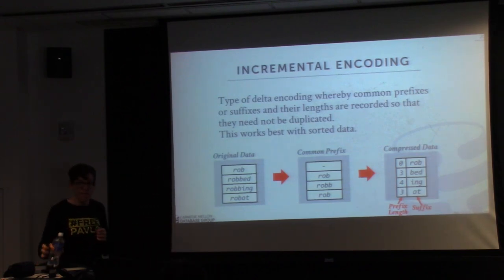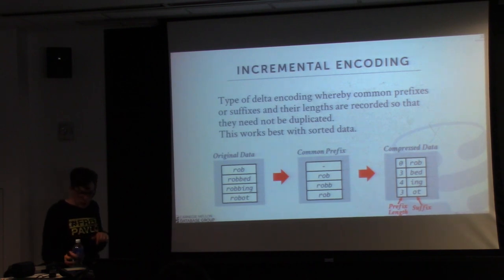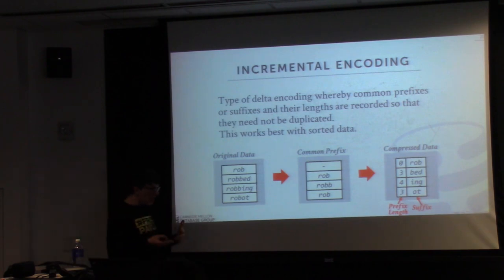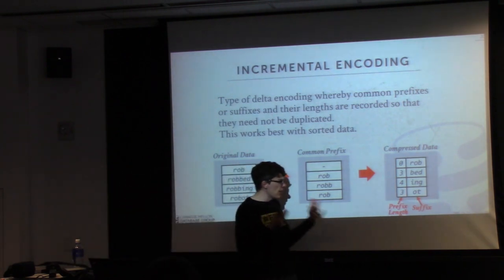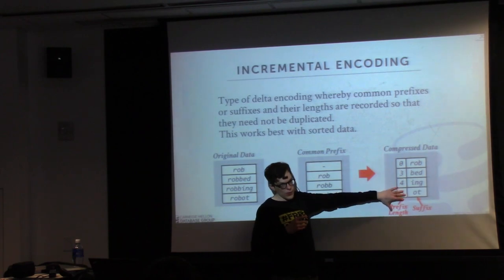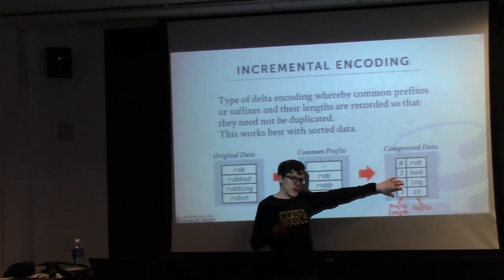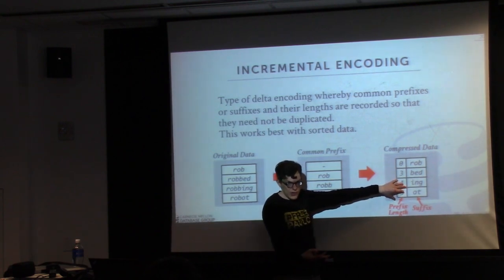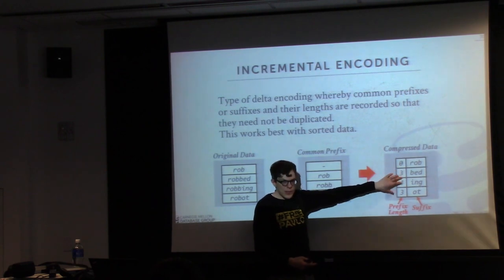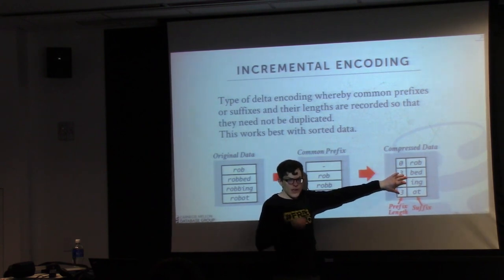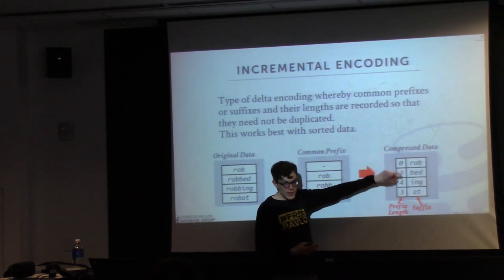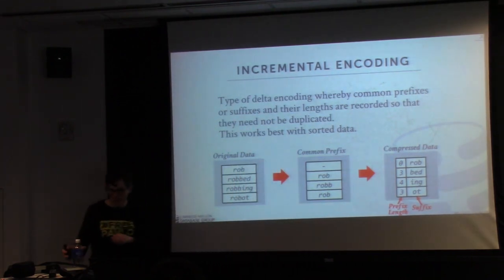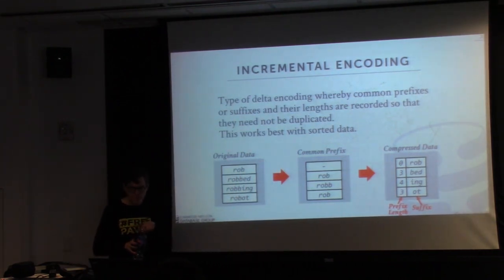A student asks if incremental encoding would be more compact in alphabetical order. Yes — this only works if done in sorted order. We'll see this when we do dictionary encoding, where inner leaves with mappings are sorted for order-preserving dictionaries. Like run-length encoding, pre-sorting the data intelligently gives the best compression ratio.